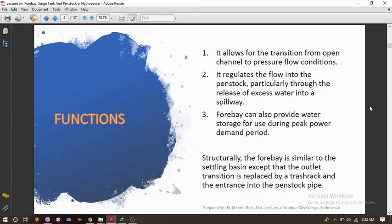So now what are the functions of forebay? The first function is it allows the transition from open channel to pressure flow condition. That means immediately after the forebay the pressure flow condition arises. The forebay allows the water to enter into the penstock so that the pressure flow condition starts.